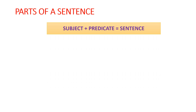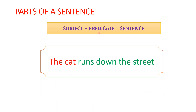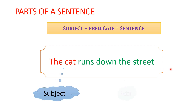Let's start with the parts of an English sentence. In English, every sentence needs these two parts: the subject and the predicate. We will see an example. 'The cat runs down the street.' Here, the cat is the subject and runs down the street is the predicate.